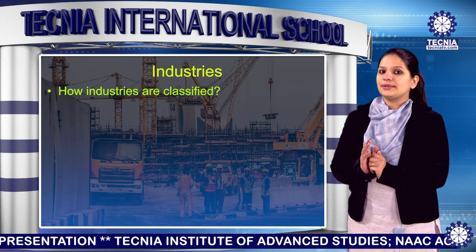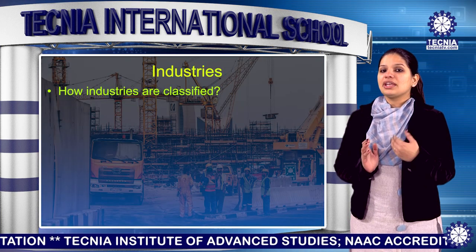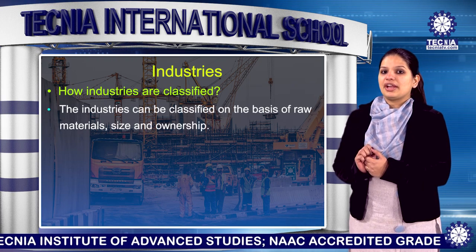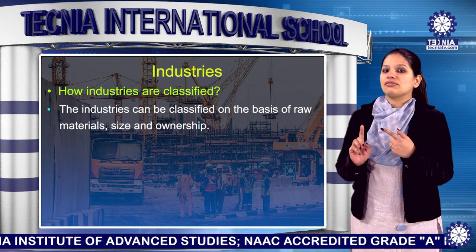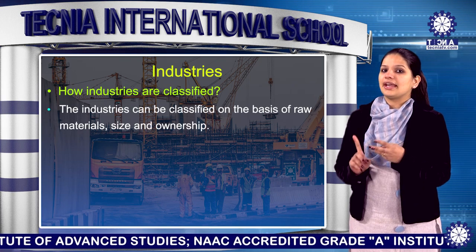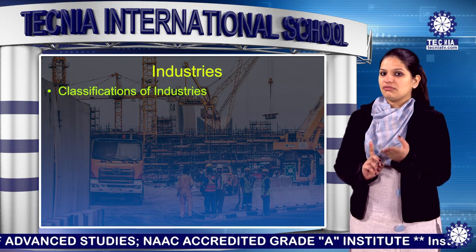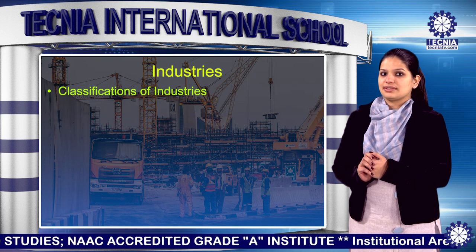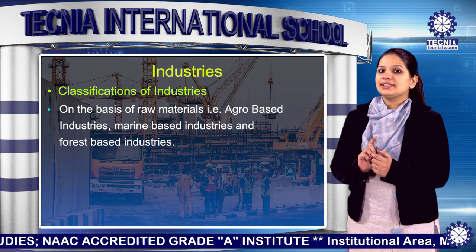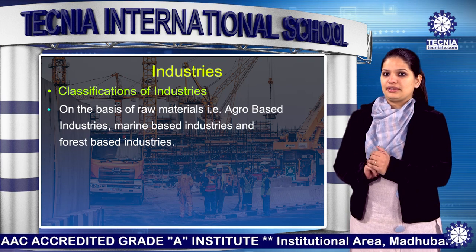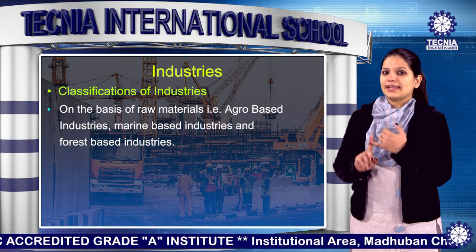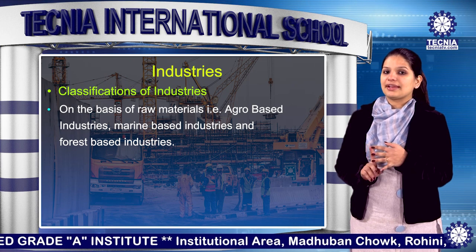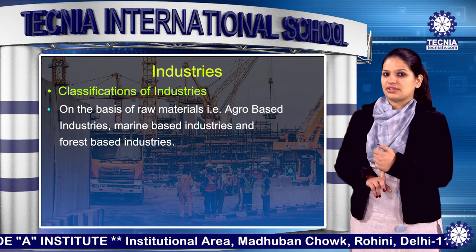Now I will tell you how these industries have been classified. The industries can be classified on the basis of raw material, size and ownership. To begin with, let's discuss the classification of industries on the basis of raw material: agro-based industries, mineral-based industries, marine-based industries and forest-based industries.